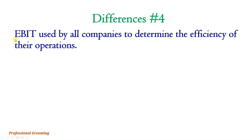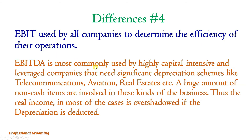Difference number four: EBIT is used by all companies to determine the efficiency of their operations, but EBITDA is most commonly used by highly capital-intensive and leveraged companies that need significant depreciation schemes — like telecommunication companies, aviation, real estate, and so on. Huge amounts of non-cash items are involved in these businesses, and the real income is often overshadowed if depreciation is deducted.